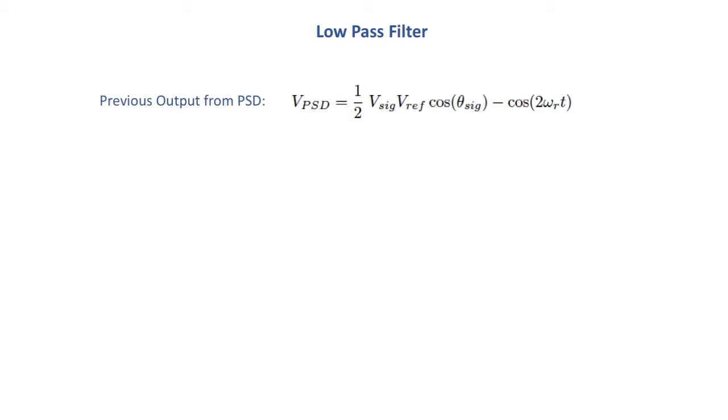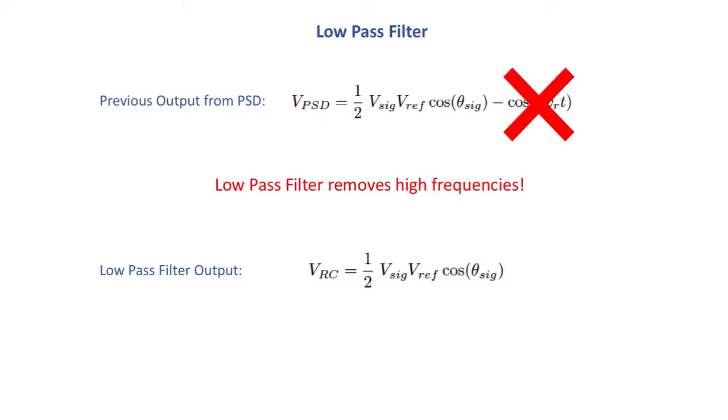So what you see before is we have the previous output from the phase sensitive detector where we have this cosine 2ωRt. So that's twice the frequency as the reference. So the low-pass filter removes that high frequency and that leaves us with an output of just one-half the amplitude of the signal, the amplitude of the reference times cosine of the phase shift between them.